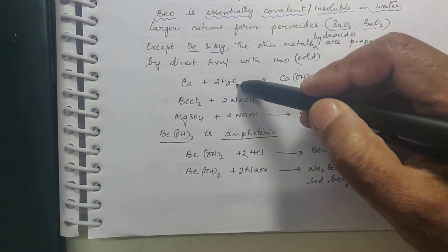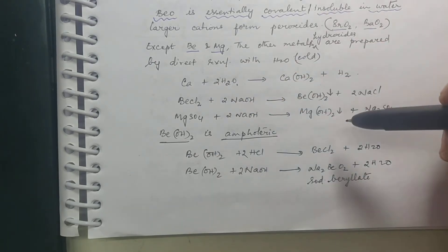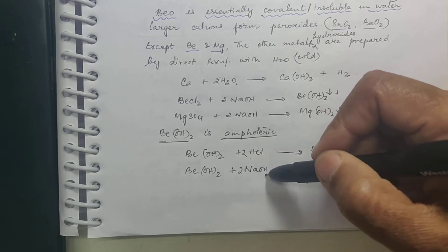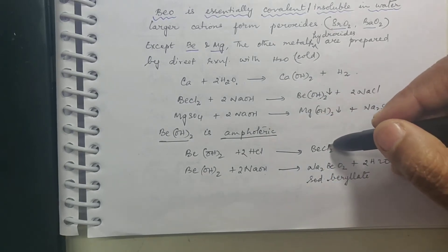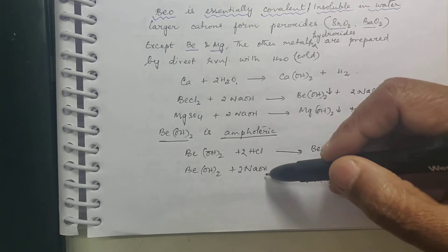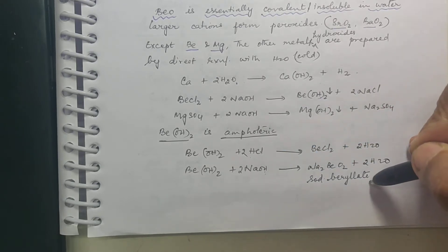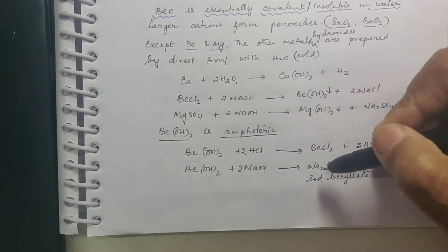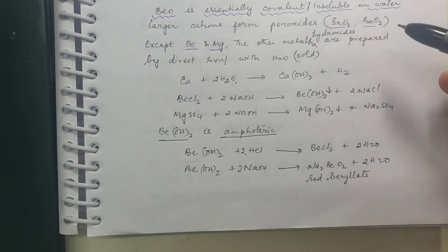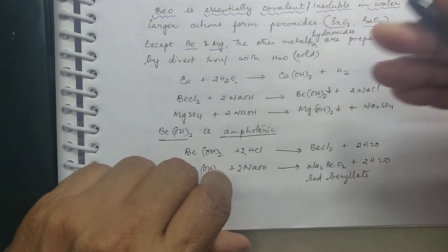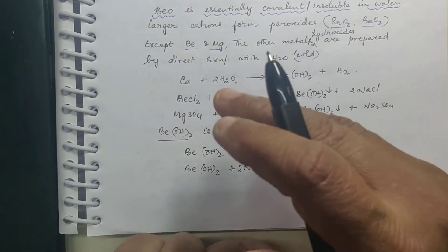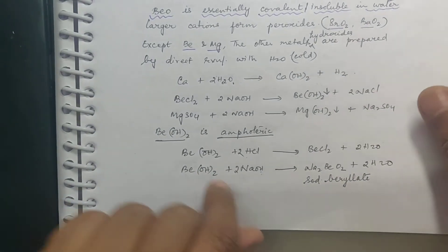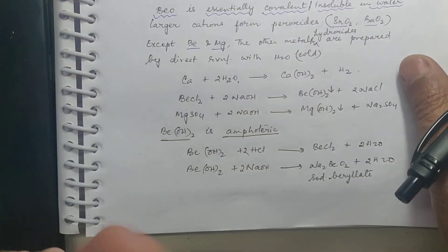Be(OH)2 is amphoteric — it will react both with acid as well as base. With acid it gives beryllium chloride and water; with NaOH it gives sodium berylate plus water. This kind of salt is called an oxo metallic salt — an oxygen-containing salt. For example, NaClO3 (sodium chlorate) is an oxo metallic salt.